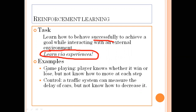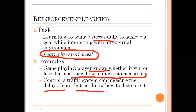We can cite some examples: in game playing, a player knows whether it wins or loses, but not how to move at each step. In traffic control, a traffic system can measure the delay of cars but not know how to decrease it. These are very good examples of reinforcement learning. Question one for this lecture: tell me one game which truly acts on the basis of reinforcement learning — comment your answer as homework.